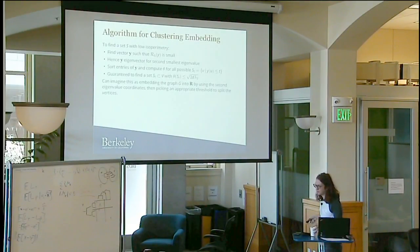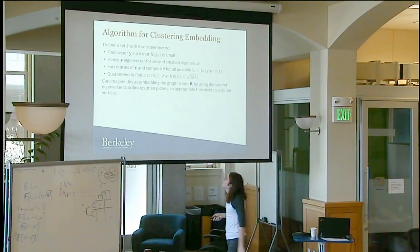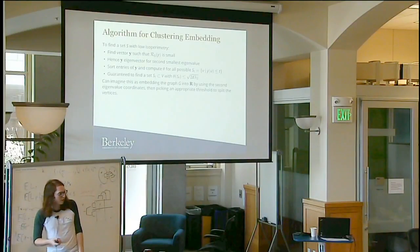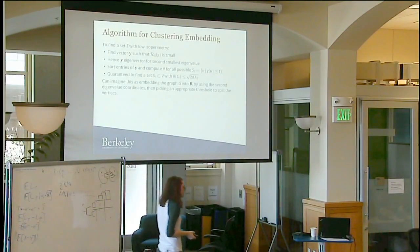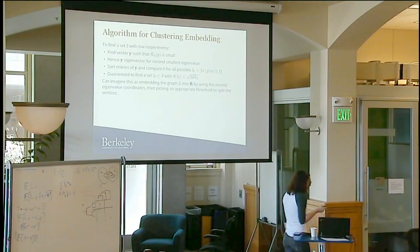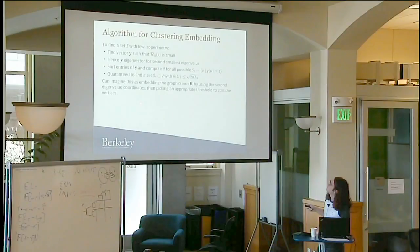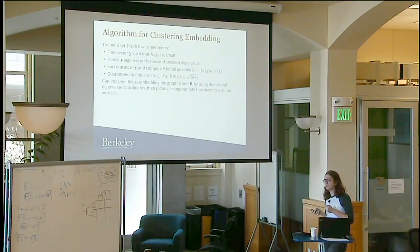This immediately gives us an algorithm. The way this theorem is proved is through an algorithm, basically. We want to find a set with really small isoparametry. So what do we do? We want a y which has really low Rayleigh quotient. We know the y with the smallest Rayleigh quotient is the second eigenvector by Courant-Fisher. So we take the second eigenvector, we order the entries, and we start to look at the subsets formed by picking a threshold. We're guaranteed one of these subsets is going to have isoparametric ratio bounded by this function of lambda 2. We should imagine this as an embedding of our graph into R, into just the line, where for every vertex we're picking the coordinate of the second eigenvector. Then we're just picking some point to split the line. The vertices on the left-hand side of our split will be in one subset, and the vertices on the right will be in the other subset.